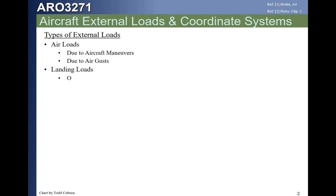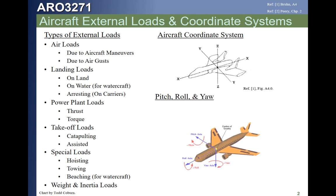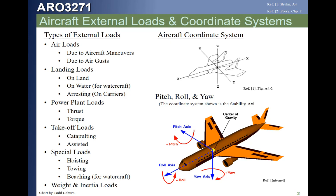There are a number of loads that occur on aircraft during flight: air loads, landing loads, power plant loads, takeoff loads, and a number of special cases. A common aircraft coordinate system is shown here. Often X is chosen in the longitudinal direction — usually X is positive aft, so fuselage stations get larger as you move aft. Y is chosen to one side, and Z is often chosen as positive down, which follows the right-hand rule. We also talk about the roll axis, the pitch axis, and the yaw axis.